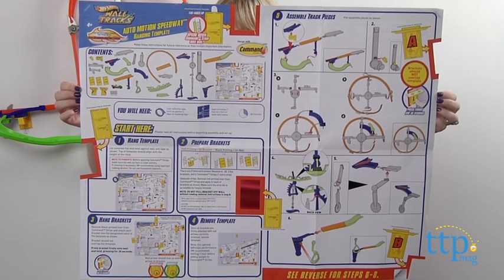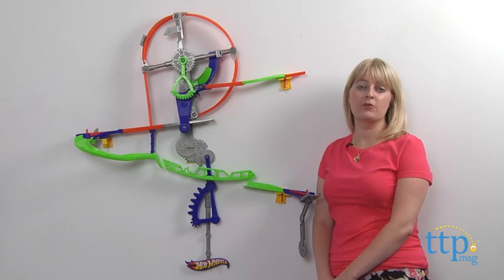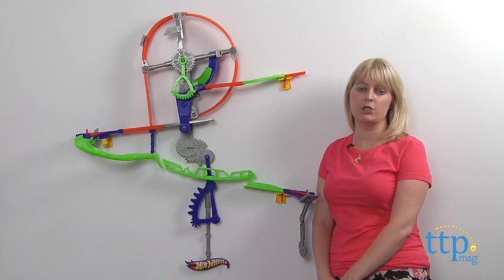Use the included template to hang the 5 brackets with the command strips, and remove the templates and assemble the track pieces. When the track set is complete, hang it on the wall via the brackets, and this whole process took us about 15 minutes to do.